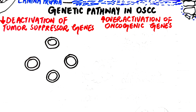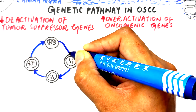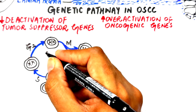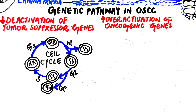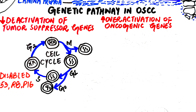Here's how tumor suppressor genes normally protect us. During the cell cycle, checkpoints at the G1, S, and G2 phases act like security gates. Tumor suppressor genes like p53, Rb, and p16 stop the cycle if there is any DNA damage, either helping repair it or pushing the cell into the G0 rest phase or death. But in cancer, these genes become inactivated or mutated, disabling these checkpoints. As a result, damaged cells slip through, divide uncontrollably, and that is how cancer starts.